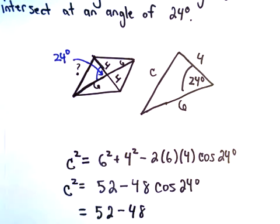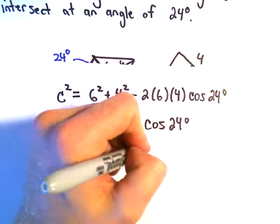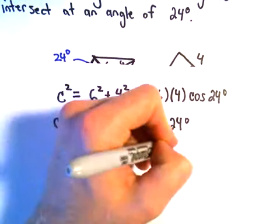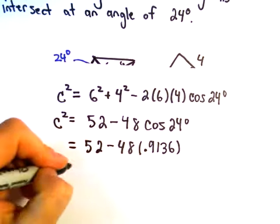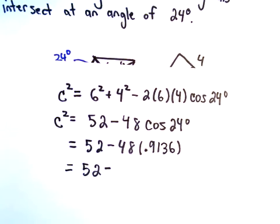Let's see. Cosine of 24 degrees. I'm getting that to be roughly 0.9136. If we take 48 and multiply that by 0.9136...